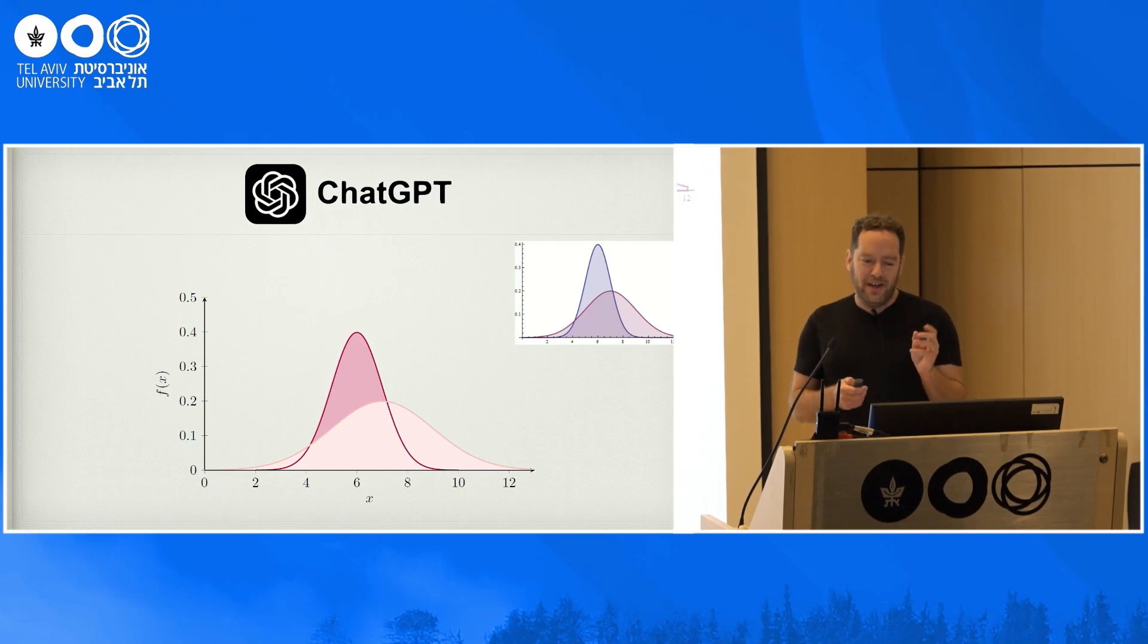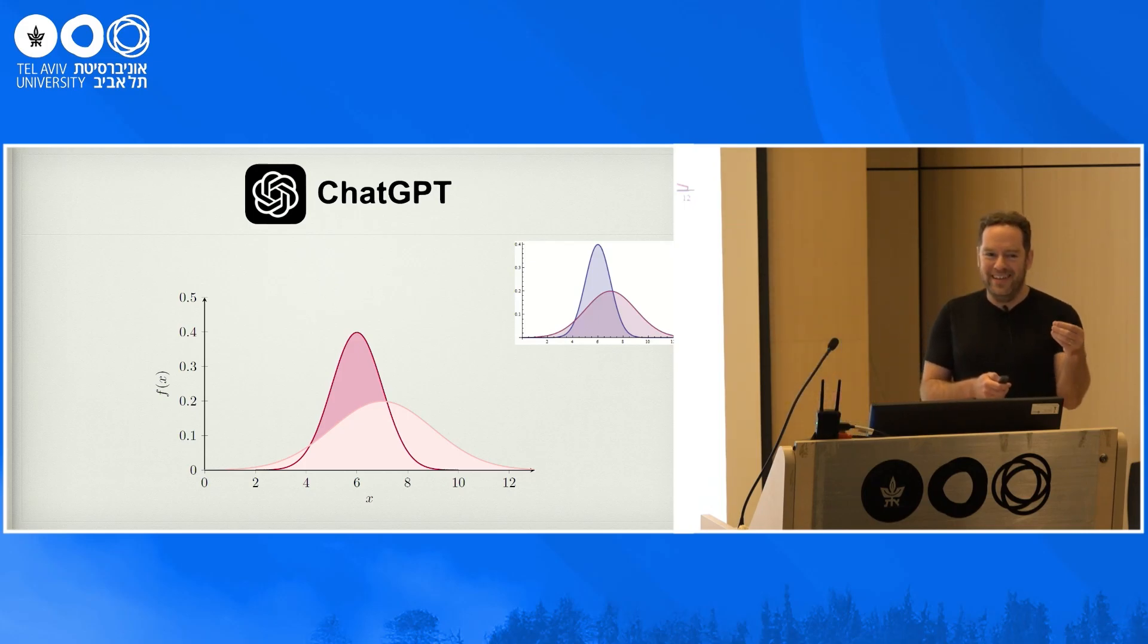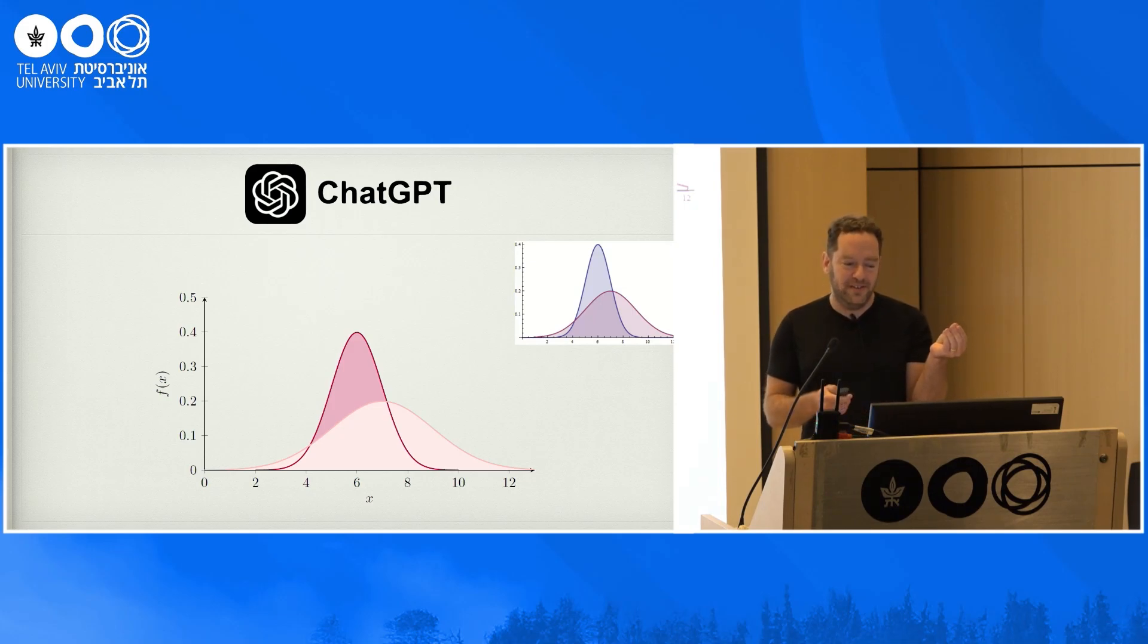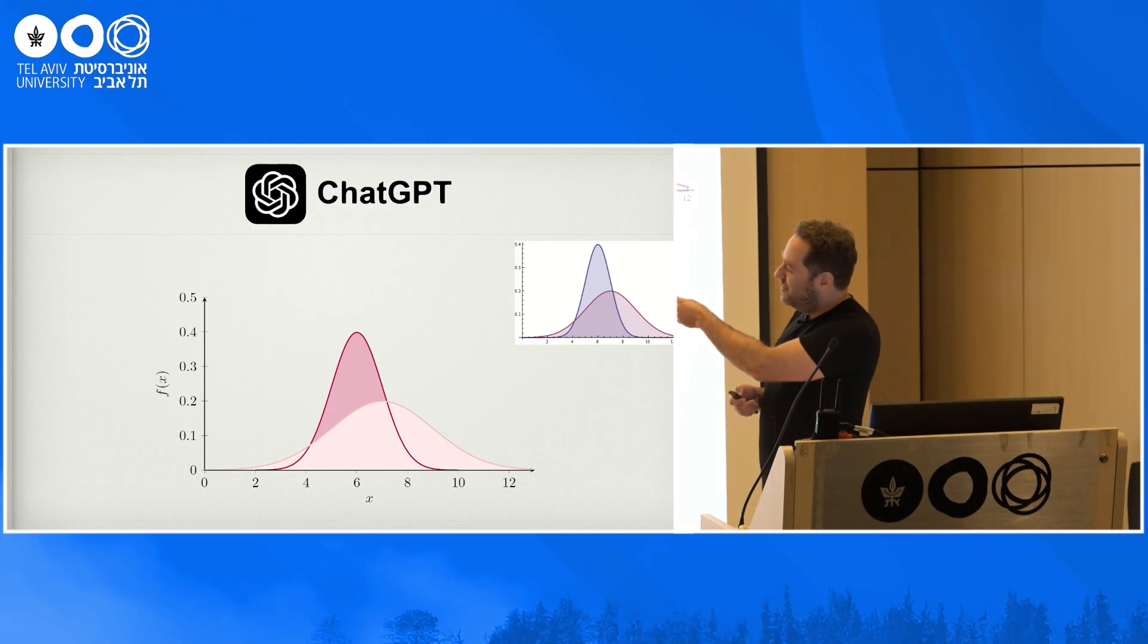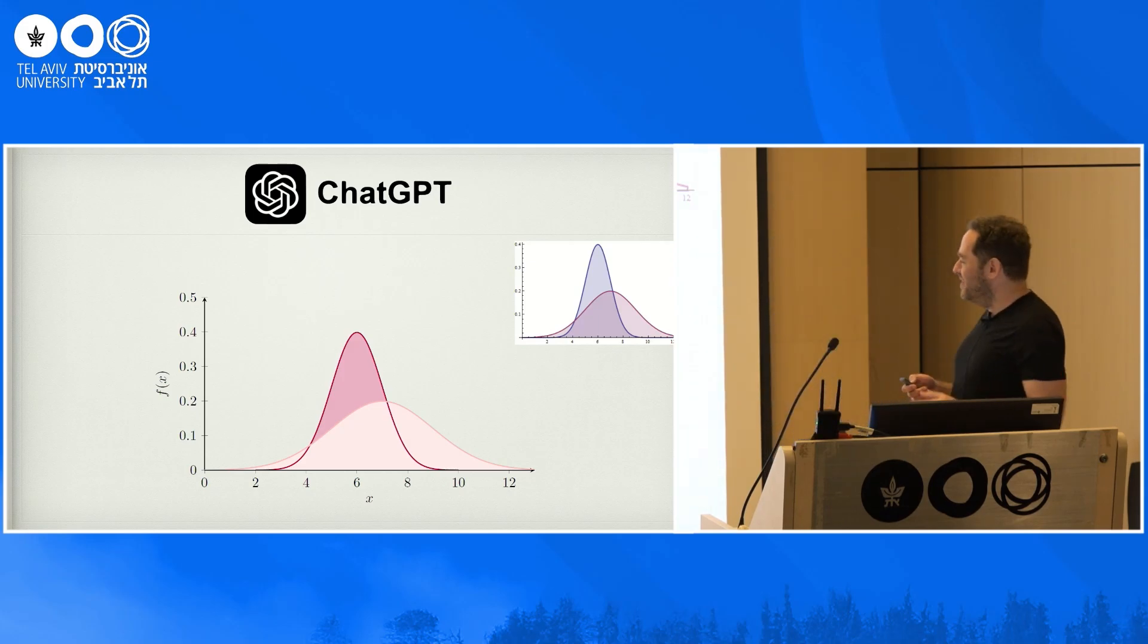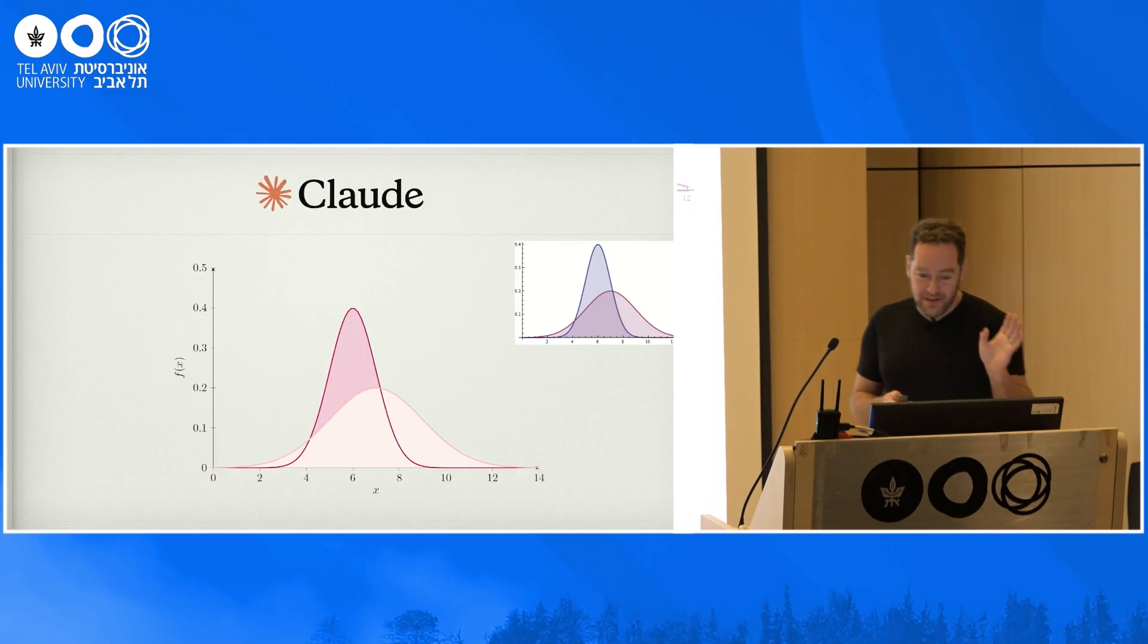And the result that I get is quite wonderful. So ChatGPT actually generates TikZ code that computes the Gaussian PDF with the correct expectation and the correct variance, and you get a really almost perfect plot. So it somehow thought that I would want to have the label f of x on the y-axis, which I didn't ask for, but okay. Other than that, I think the plot is very good.